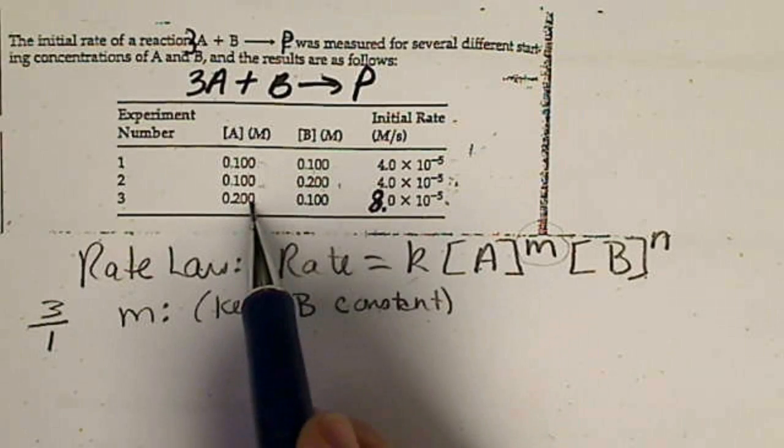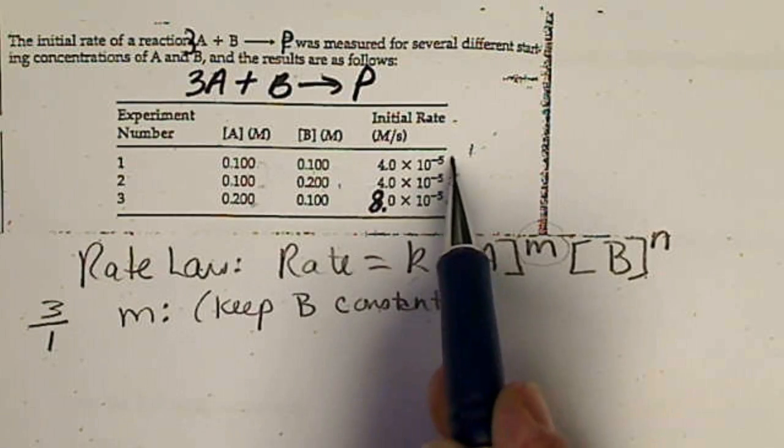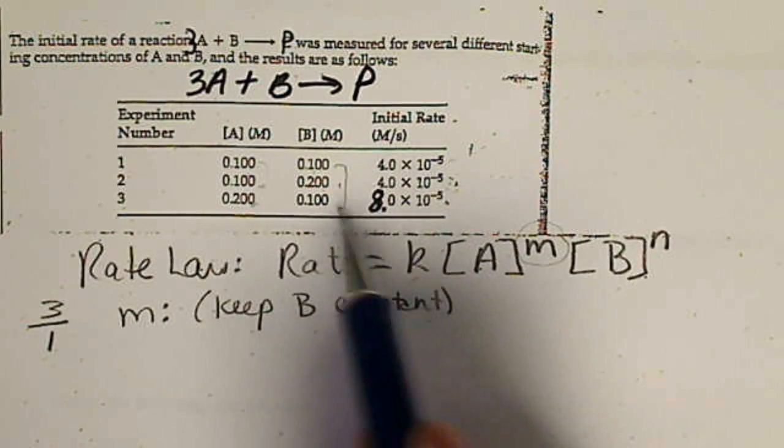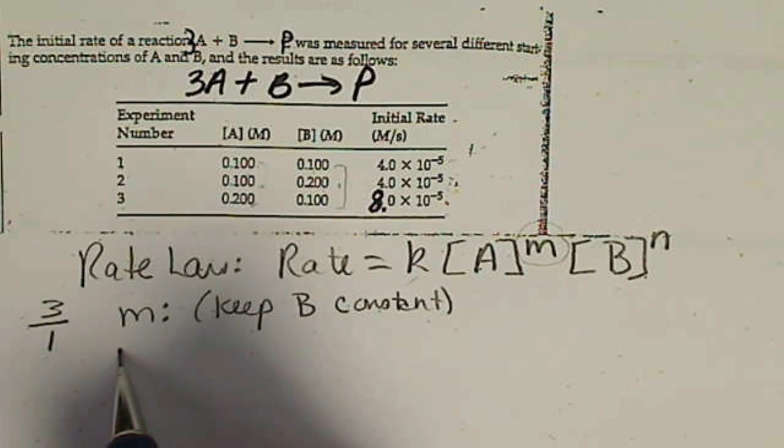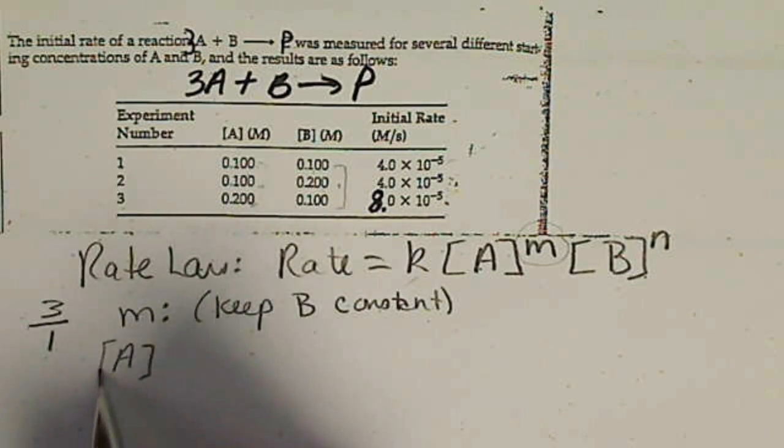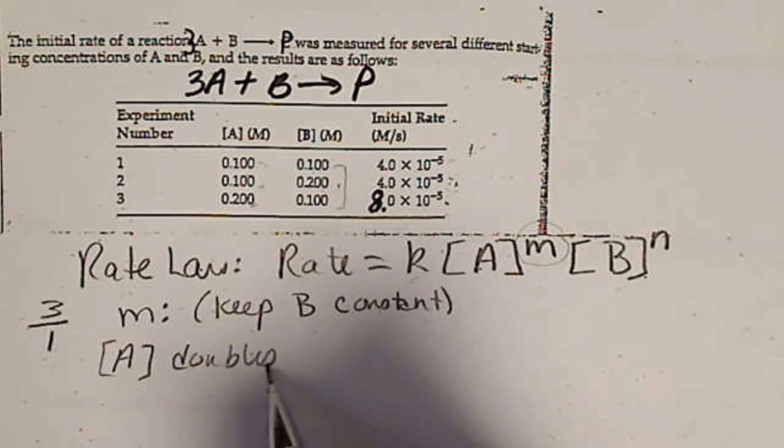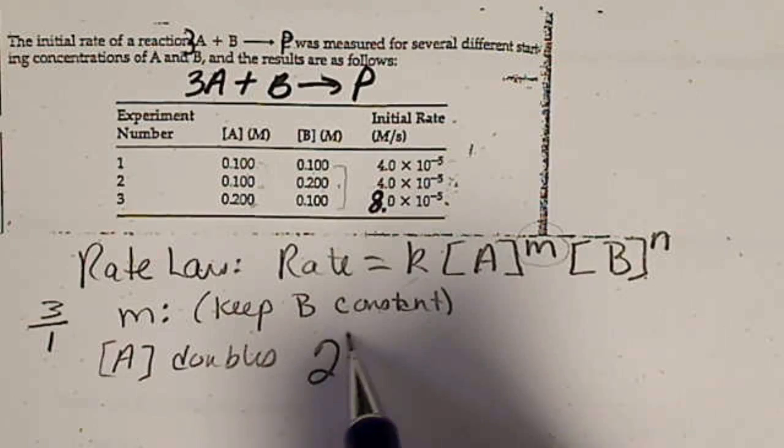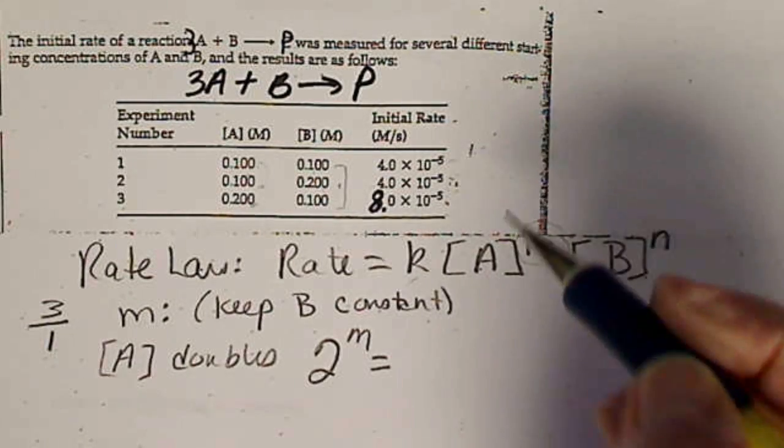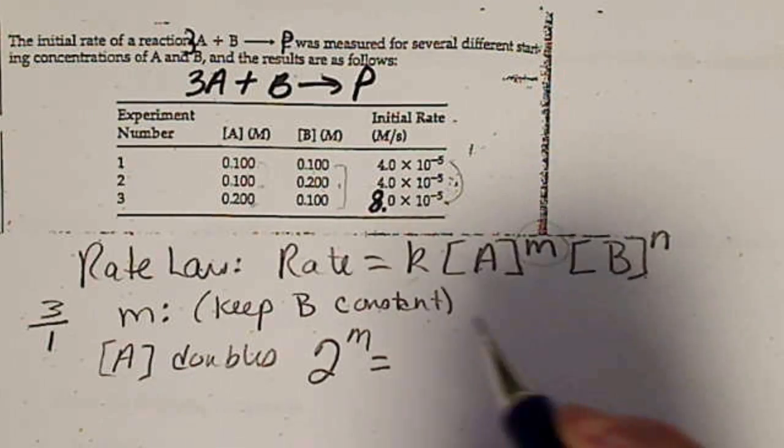So A doubles, and the rate, that's where B stays the same, and the rate doubles. So when the concentration of A doubles, that double means we're going to write a 2 to the M.